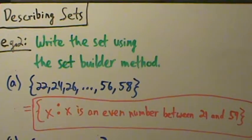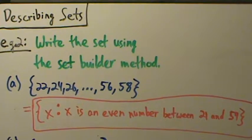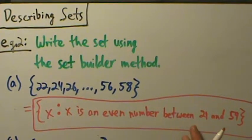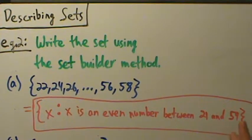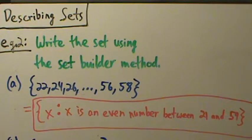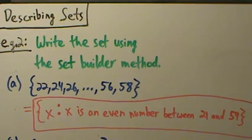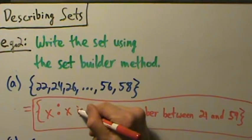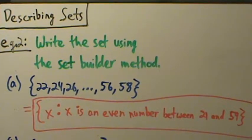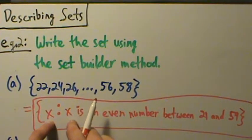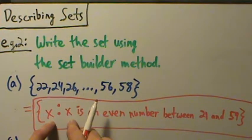There are other ways to write this. You could say between 22 and 58, inclusive, or between 20 and 60, not inclusive. But that's writing more than needed. Also, the variable doesn't have to be x — you could use y, z, t, w, a, b, c, etc.